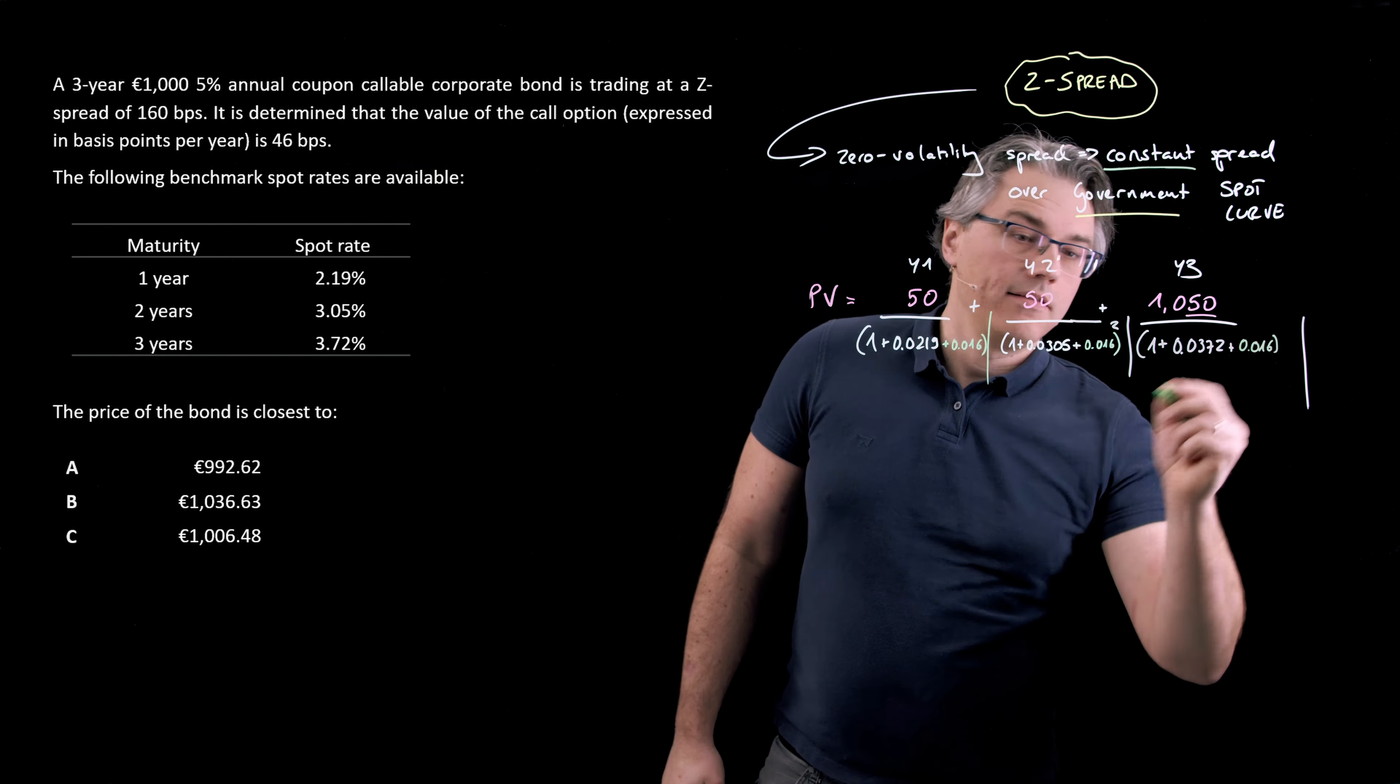Because my calculator is set to AOS, algebraic operating system, as opposed to the chain rule, it should be able to handle this computation pretty easily without writing subresults down. If you haven't yet changed the setting of your calculator to AOS, I suggest you do it as quickly as possible. There's a separate video on that on the channel. I'll include a link to it in the description of this recording.